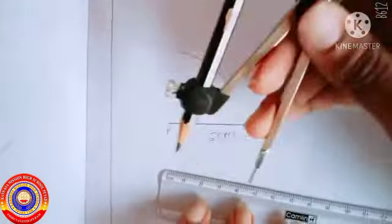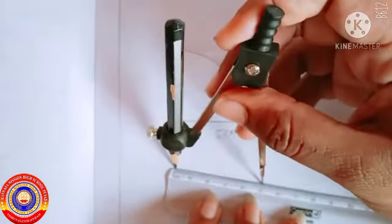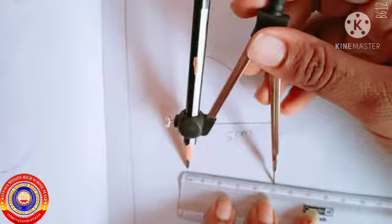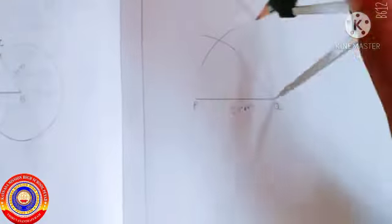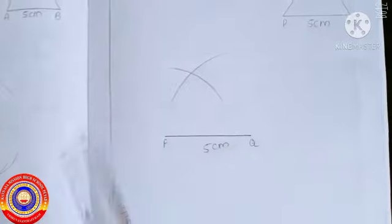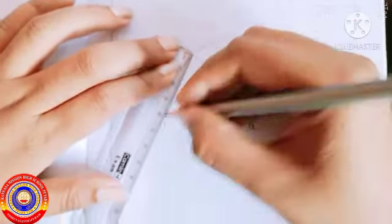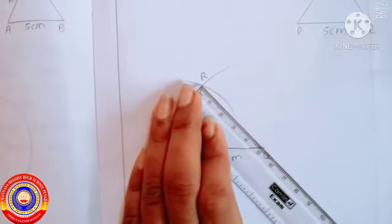Using a compass, measure 5 centimeters, place the compass at point Q, and draw an arc. The two arcs will meet at a point, so join that point.